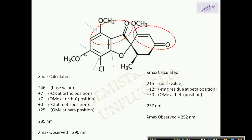In the next example we have griseofulvin, which is an antifungal medicine. The base system has a value of 246nm. OR group at ortho position — add plus 7; another OR at another ortho position — add plus 7. The chlorine atom is at the meta position — add plus 0. The methoxy group at the para position — add plus 25. Total is 285nm and the observed value is 290nm. Additionally, griseofulvin also shows a band at 250nm because it has an alpha-beta unsaturated system. For this, the base value is 215nm, one ring residue at the beta position adds plus 30, and one ortho methoxy group at the beta position adds plus 12. Total is 257nm.